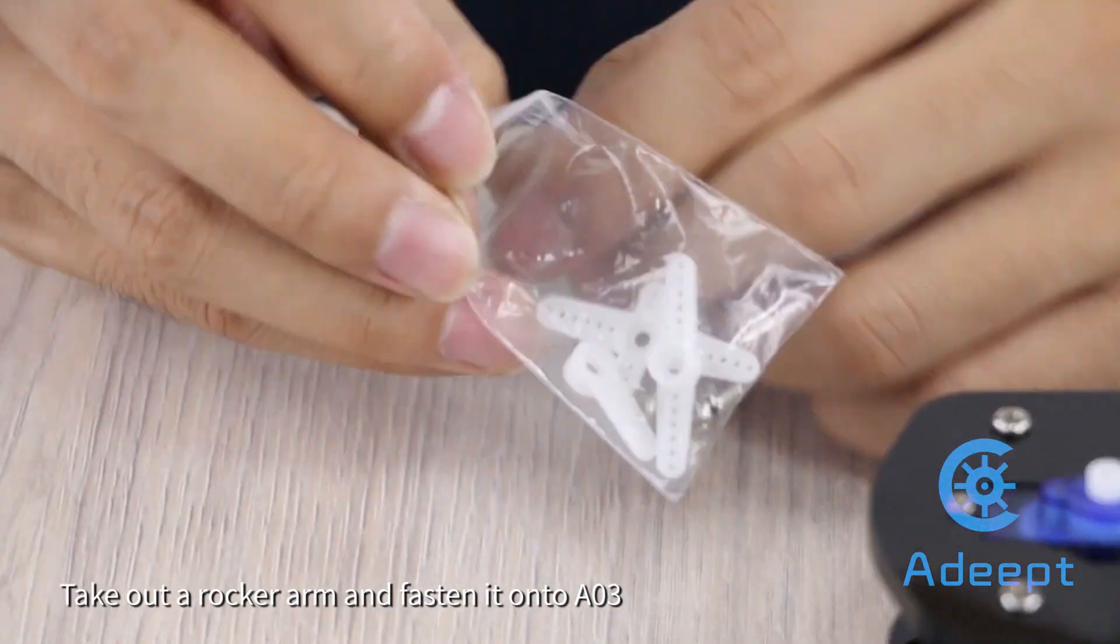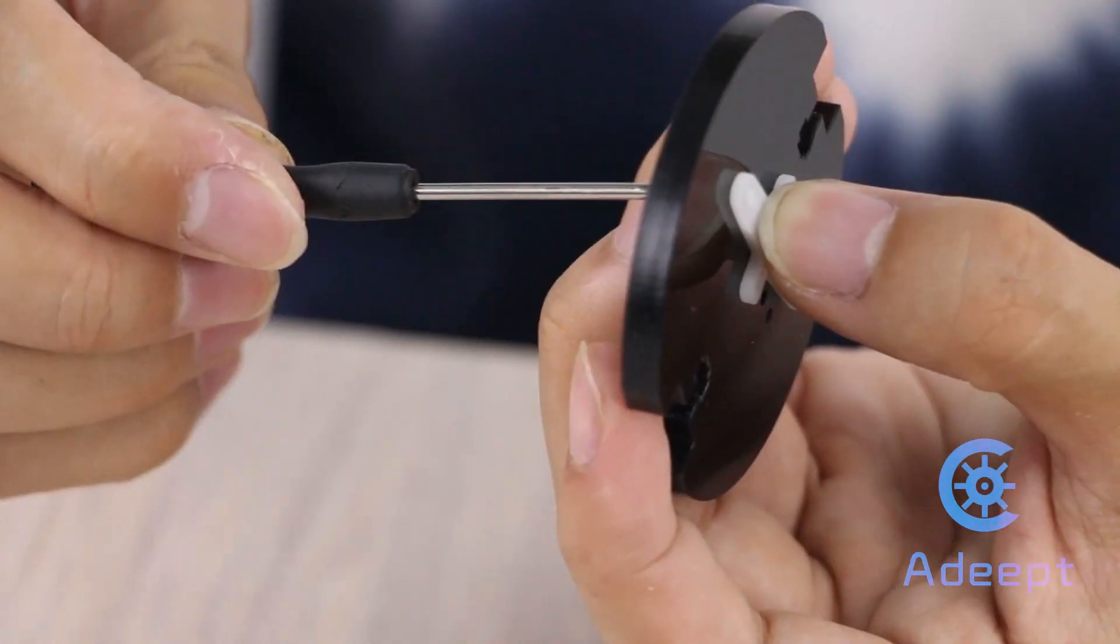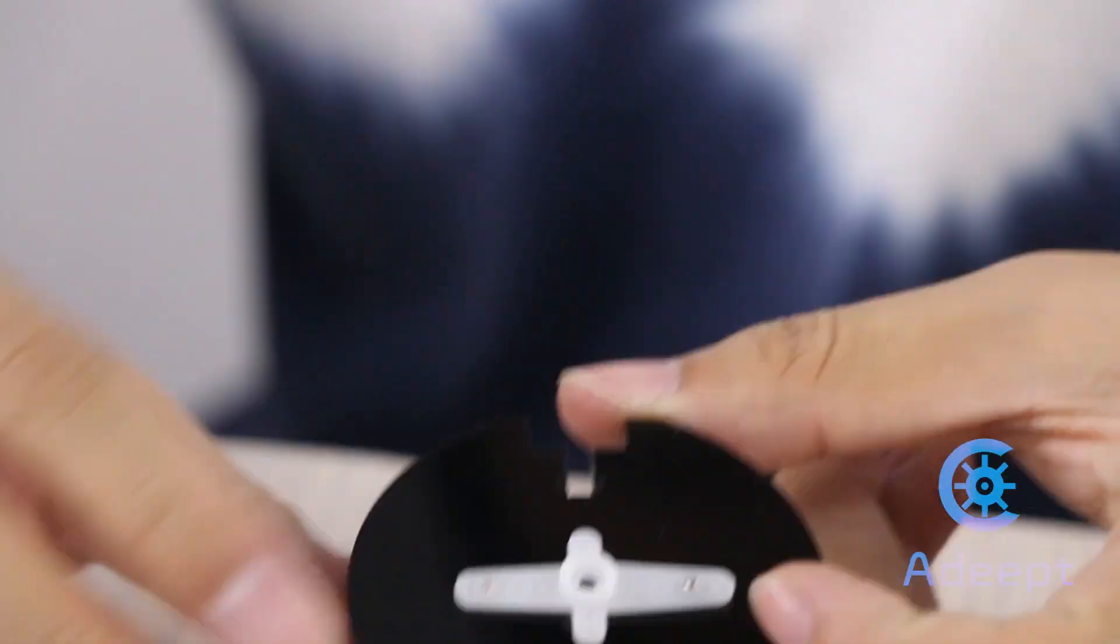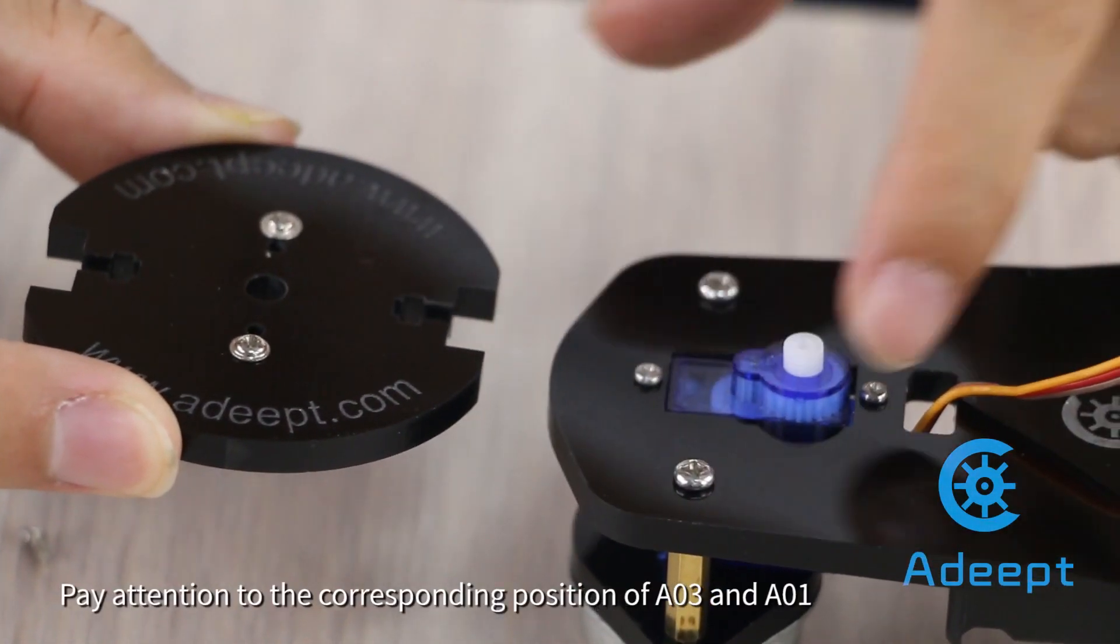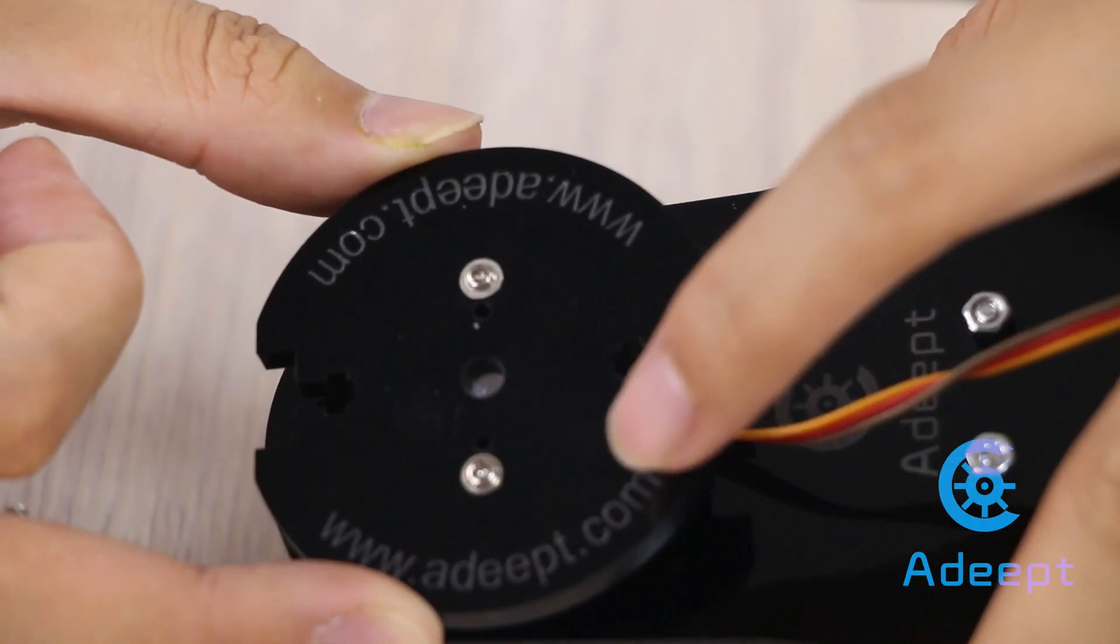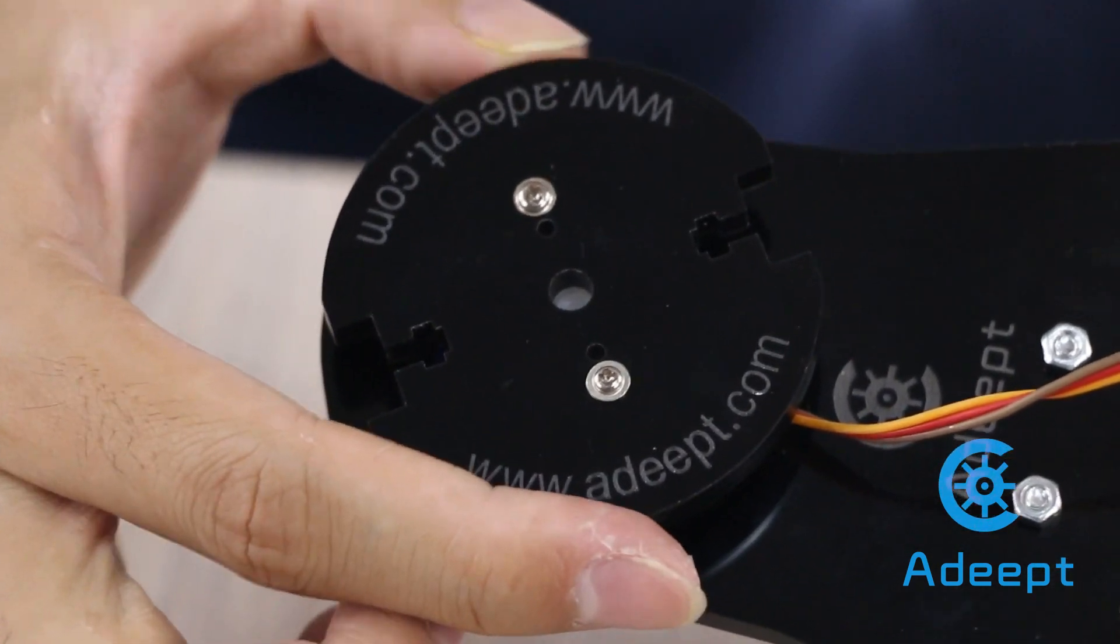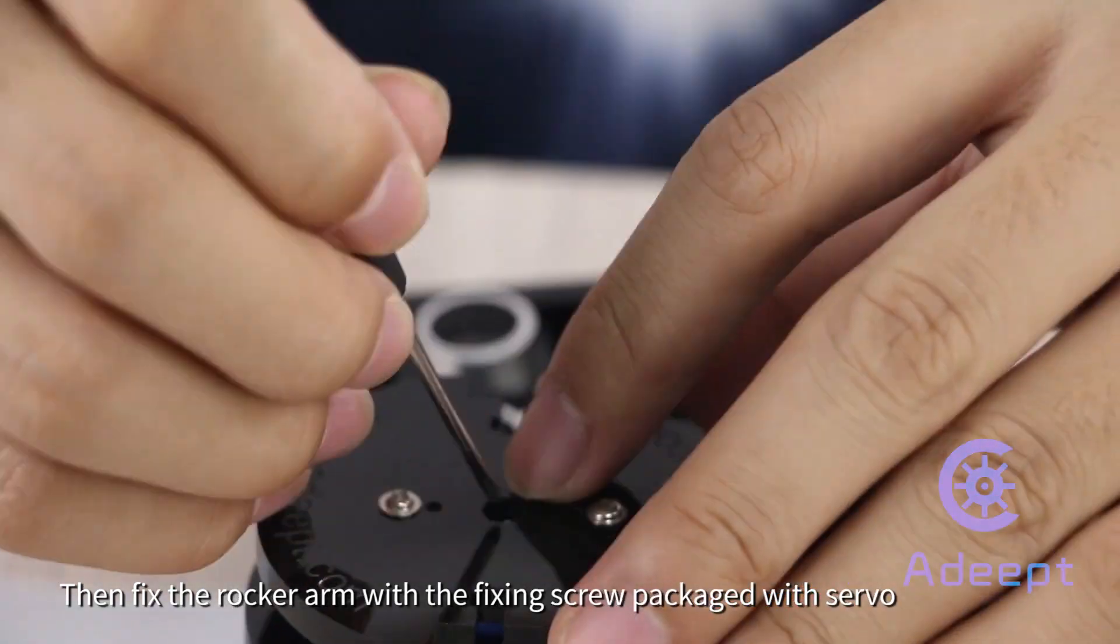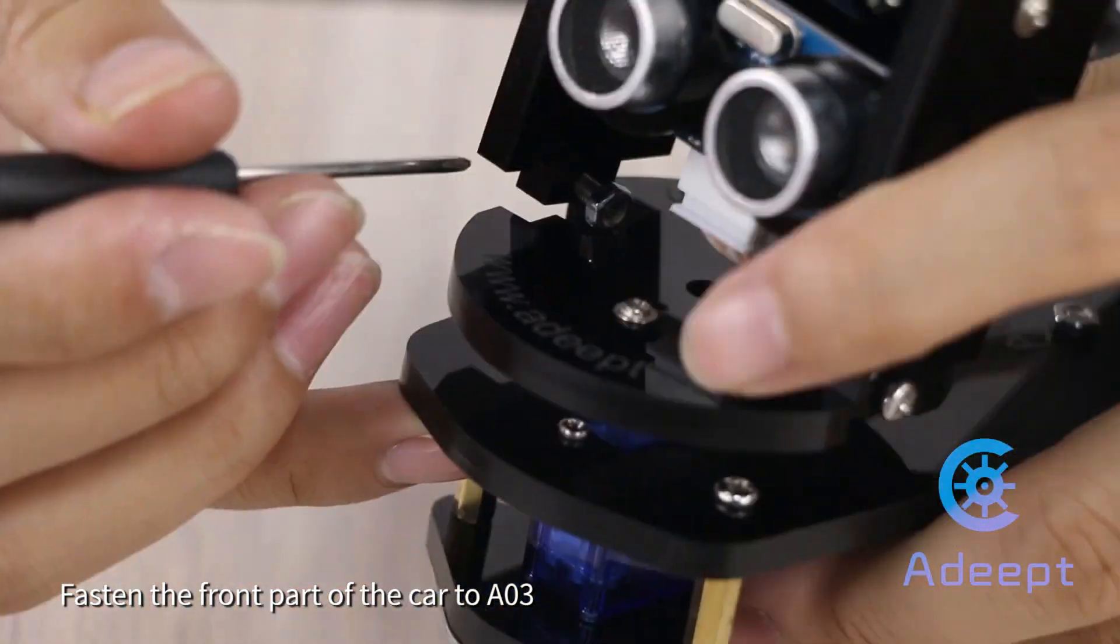Take out a rocker arm and fasten it onto A03. Then fix the rocker arm to the servo on A01. Pay attention to the corresponding position of A03 and A01. Fasten the front part of the car to A03 with the fixing screw packaged with servo.